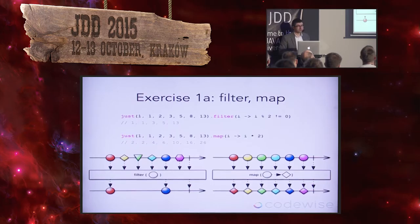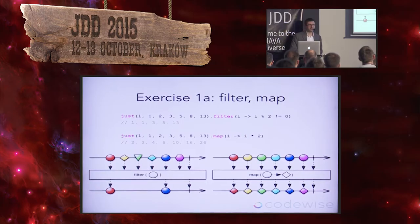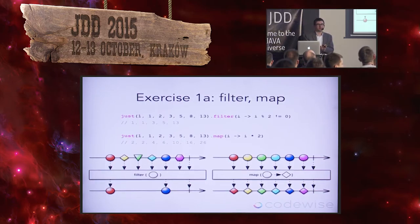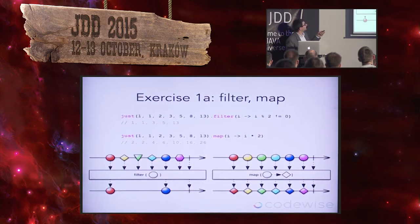So this is the first exercise. Inside the code there are comments saying what interesting things are here and what you should do to complete it. The 'just' operator creates an observable sequence out of given elements. So 'just(1, 2, 3)' — okay, use it as a stream. It's not very useful by itself, but it's a good start to create a stream from prepared data.